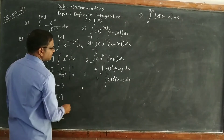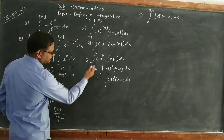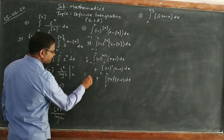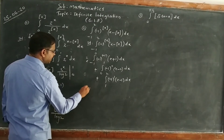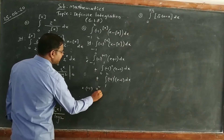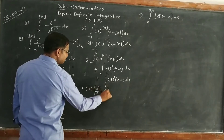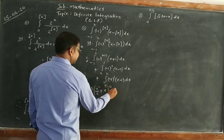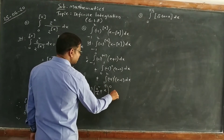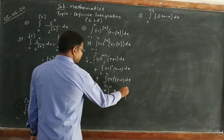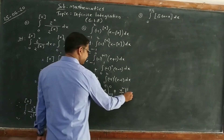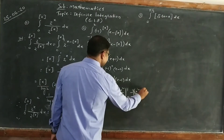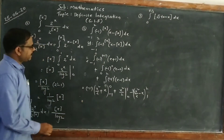Now write the integrations. (-1)^(-1) equals -1, kept aside. The integral of (x + 1) dx with limits 0 and -1 gives x²/2 + x. For the middle part, (-1)^0 = 1, so we integrate x dx with limits 0 to 1, giving x²/2. For the last part, (-1)^1 = -1, and we integrate (x - 1) dx with limits 1 to 2, giving x²/2 - x.